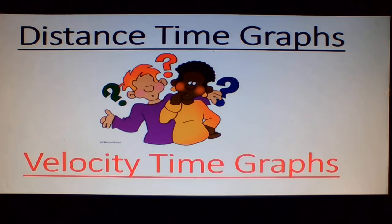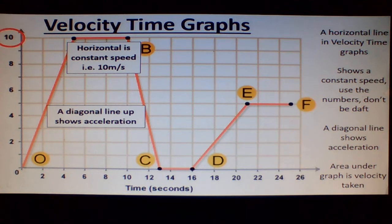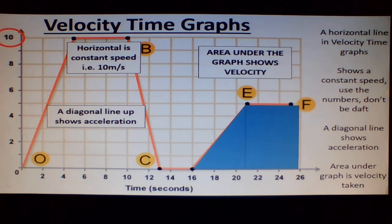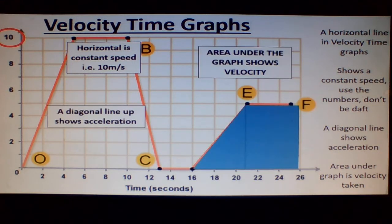What about velocity time graphs? A horizontal line in velocity time graphs shows a constant speed — use the numbers, don't be daft. A diagonal line shows acceleration, and the gradient of the line shows the speed of motion.